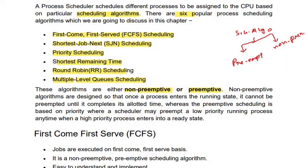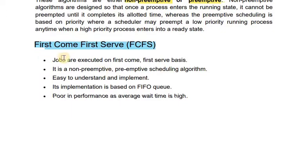We are going to discuss first come, first serve. First come first serve is non-preemptive — that means the process runs until the CPU is done with it. Another feature is it is very easy to understand and implement, and implementation is based on a FIFO queue. One disadvantage is poor performance because the average waiting time is high.